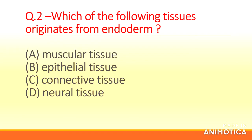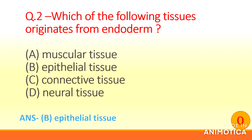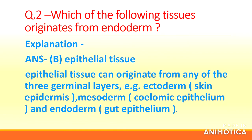Question 2: Which of the following tissues originates from endoderm? (a) Muscular tissue, (b) Epithelial tissue, (c) Connective tissue, (d) Neural tissue. Answer: (b) Epithelial tissue.